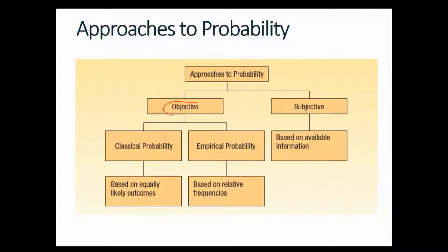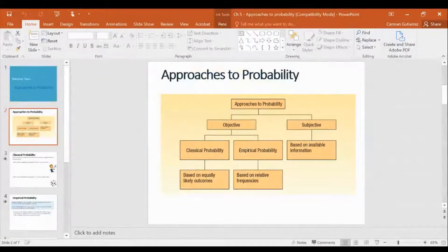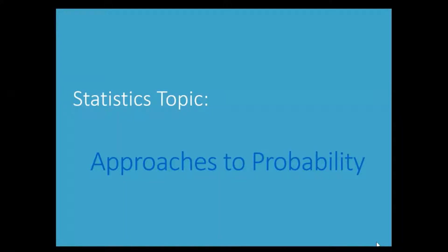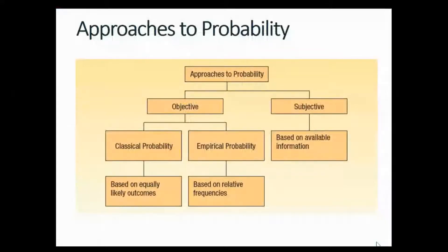The two approaches to probability are objective and subjective. You may also think of them as quantitative versus qualitative approaches. The objective approach is divided into classical probability and empirical probability. The empirical probability is based on relative frequencies.